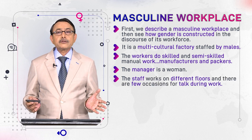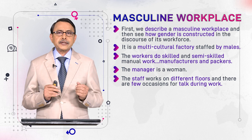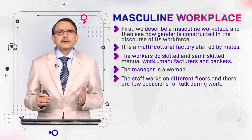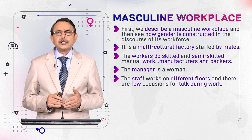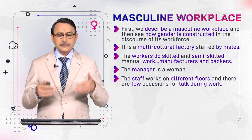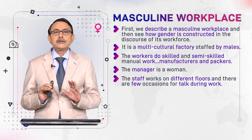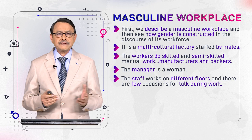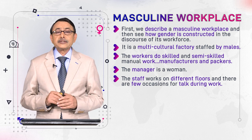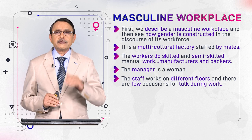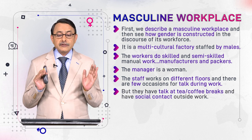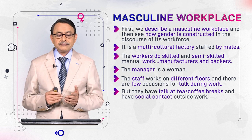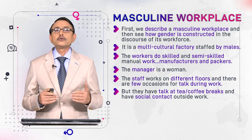The staff works on different floors of the factory — it is a multi-floor or multi-storey building. Different offices are located on different floors, and there are few occasions for talking during work, as it is not possible when people are working on different floors. But they talk at tea and coffee breaks.